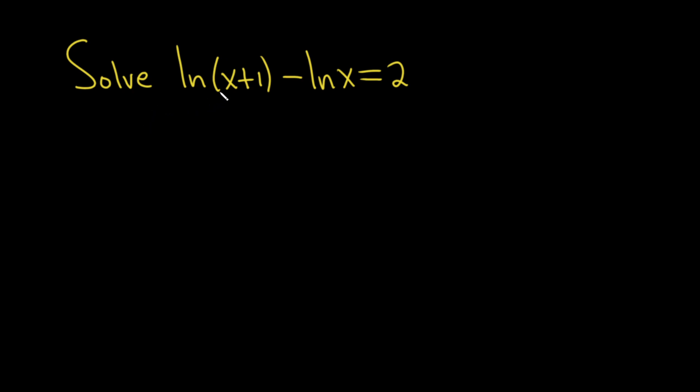Solve the natural log of x plus 1 minus the natural log of x equals 2. In this problem, we have two logarithms on one side and a number on the other.